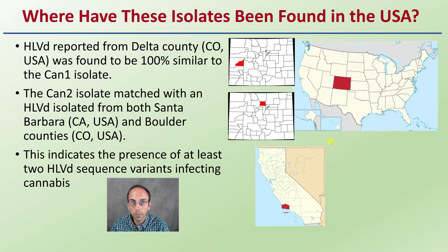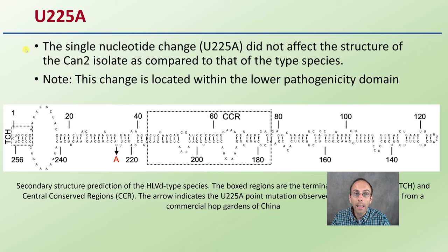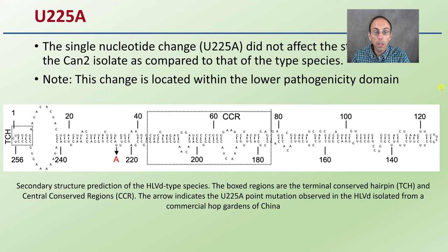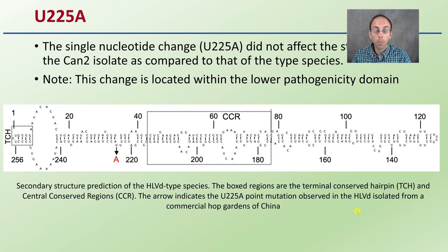Lastly, regarding the U-225A point mutation: the single nucleotide change did not affect the structure of the CAN2 isolate compared to the type species. This change is located within the lower pathogenicity domain, so it's not going to really change the virulence. The secondary structure shows the terminal conservative hairpin and central conservative regions, with the arrow indicating the U-225A point mutation — uracil to adenine — also observed in the isolate from a commercial hop garden in China. Overall, this is a very small genome compared to bacteria, eukaryotes, or even viruses, but it's showing a very stable viroid, giving us something we can hopefully target and attack without dealing with a large number of variants.